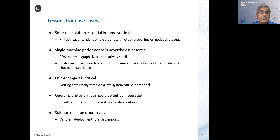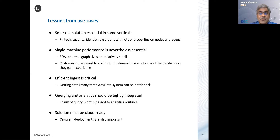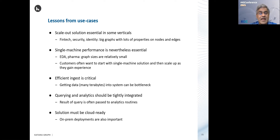Scale-out performance is also critical. Everybody who does databases knows getting data in and out of the system is very time consuming. Efficient ingest is critical — many terabytes of data need to be moved from, say, S3 buckets on AWS into memory and back, and we've spent a lot of time optimizing our ingest pipeline. Querying and analytics should be tightly integrated — users want to do a query on a graph, get a subgraph as a result, and then do analytics on that subgraph. Finally, most of our customers are already on the cloud, so the solution must be cloud-ready, but some also want on-premises deployments.